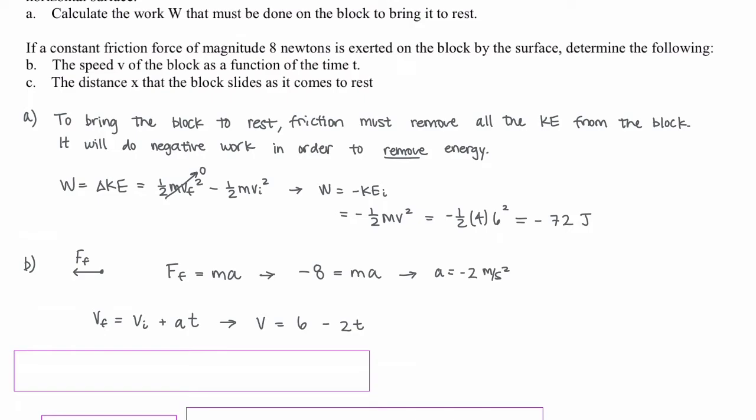Part C: find the distance x that the block slides as it comes to rest. We can use one of two options. The first is a kinematics equation using change in position rather than time: v_final² equals v_initial² plus 2a delta x. Again, v_final equals 0 because the object slides to rest.